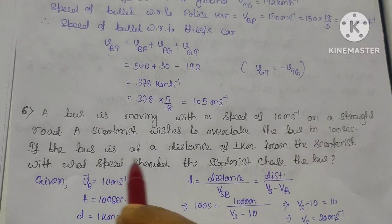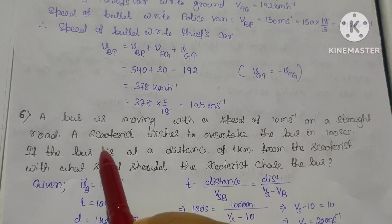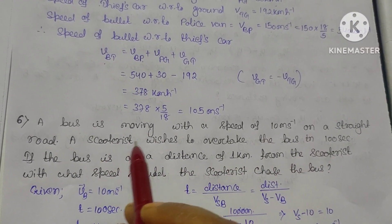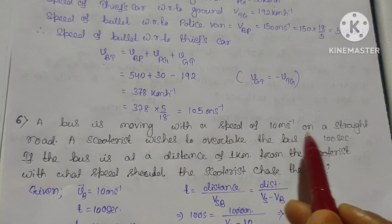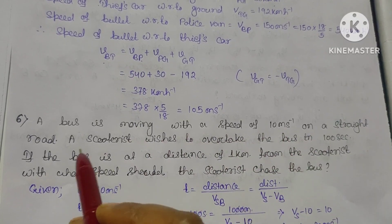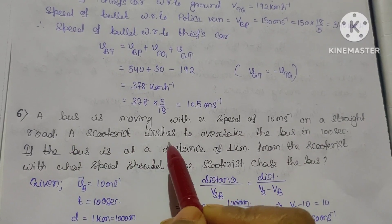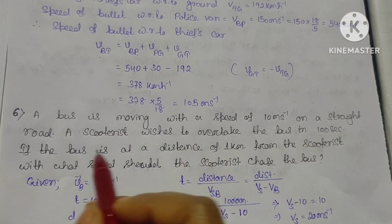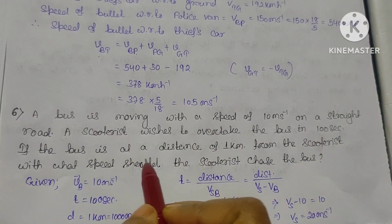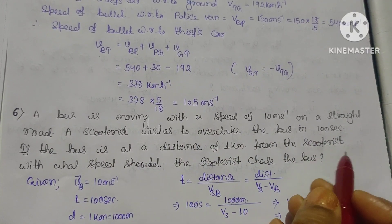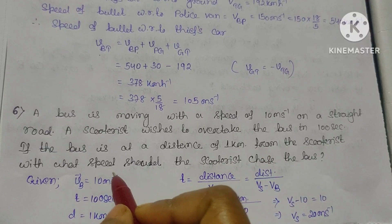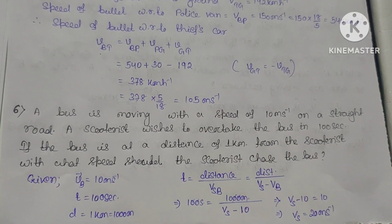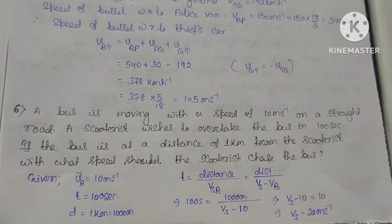The next question is straightforward: A bus is moving at 10 m/s on a straight road. A scooterist wishes to overtake the bus in 100 seconds. If the bus is at a distance of 1 km from the scooterist, at what speed should the scooterist chase the bus? You should try to solve this on your own.